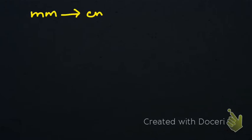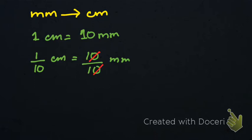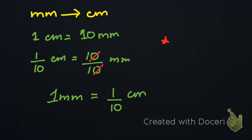Now let's look at what to do when we are converting millimeters into centimeters. We know that 1 centimeter equals 10 millimeters. To find what 1 millimeter equals, we divide both sides by 10. So 1 divided by 10 centimeter equals 10 divided by 10 millimeters. The 10s cancel, leaving us with 1 millimeter equals 1/10 centimeter.